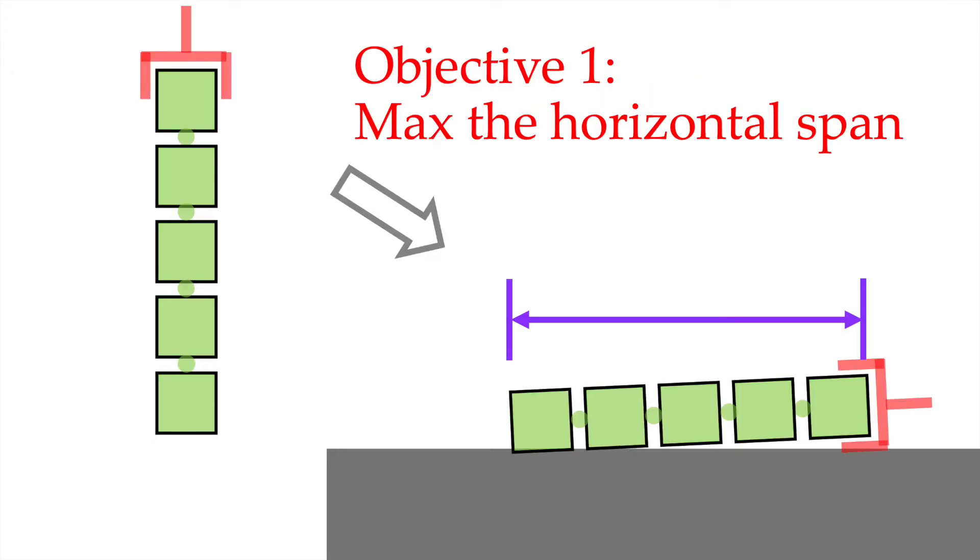There are two objectives here. The first objective is to maximize the horizontal span, which means that we want to straighten the rope as much as possible, which will give us the maximized flexibility for future knot tying.